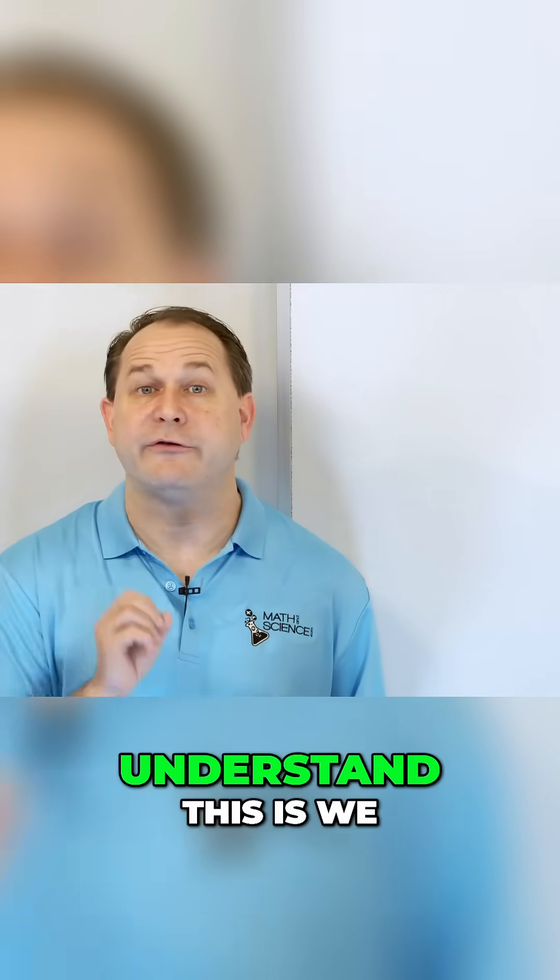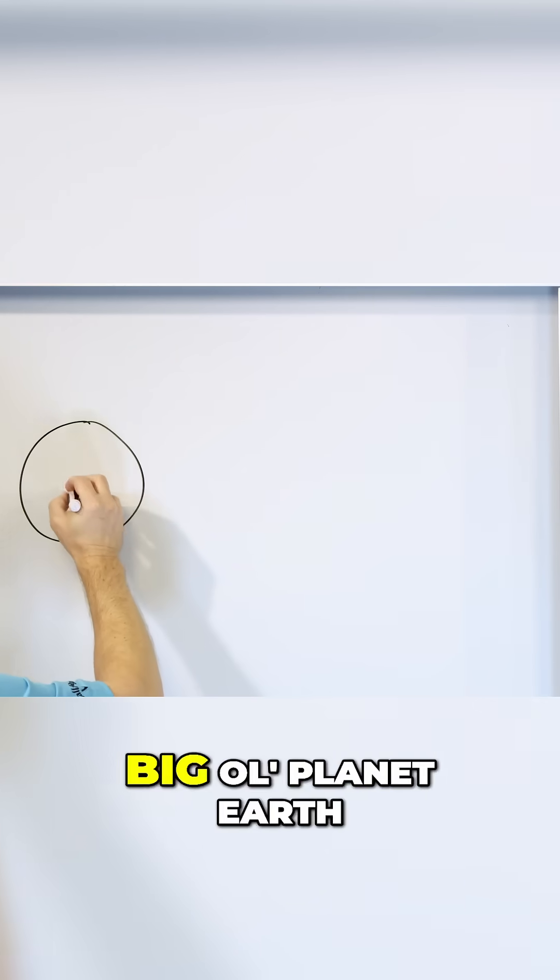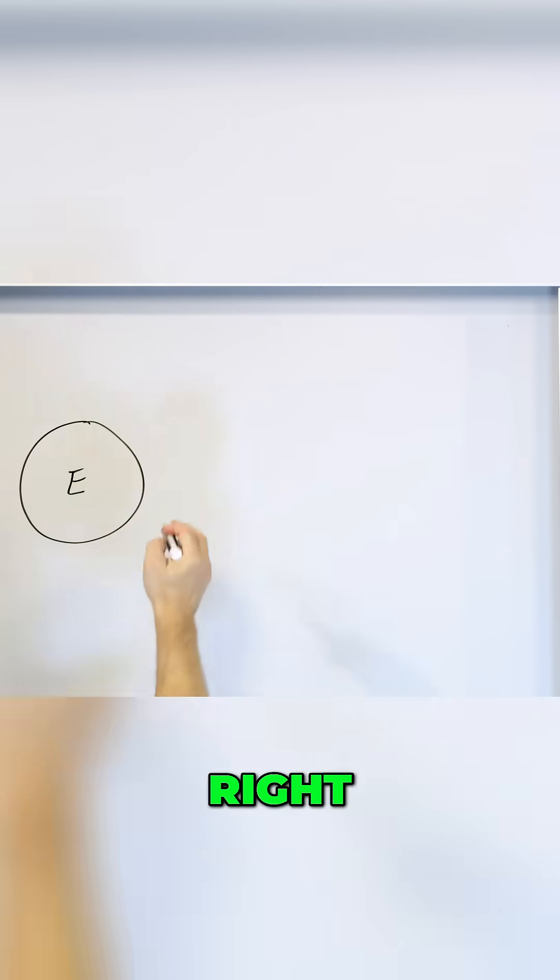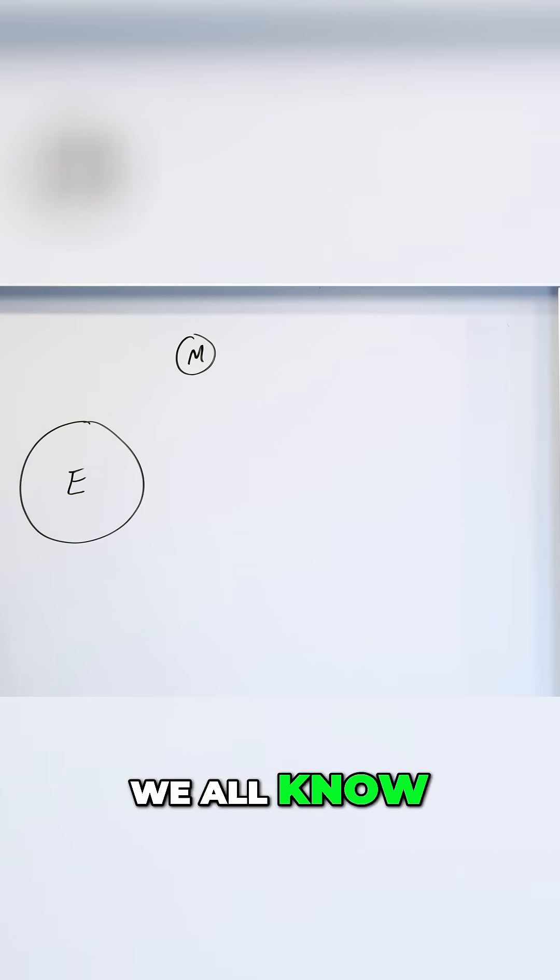So the first thing we need to do to understand this is we need to talk a little bit about gravity. So in general, here we have the big old planet Earth. We'll call that E. And just to talk about something, we'll talk about the Moon, which is orbiting the Earth.